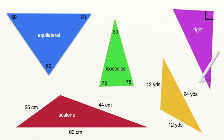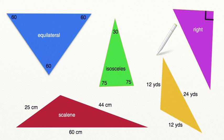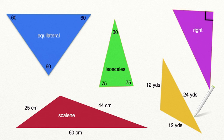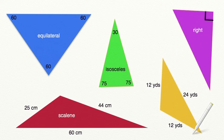Let's go ahead and look at our last triangle, the yellow one on the bottom of the screen. We have two sides that have the same length, which means that we also have two angles that have the same measurement. And if a triangle has two side lengths that are the same and two angles that have the same measure, that means we have another isosceles triangle.